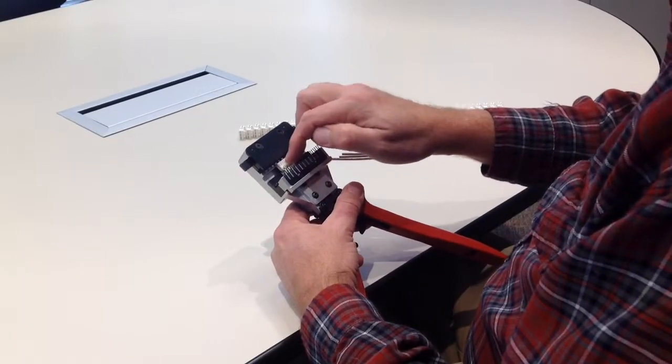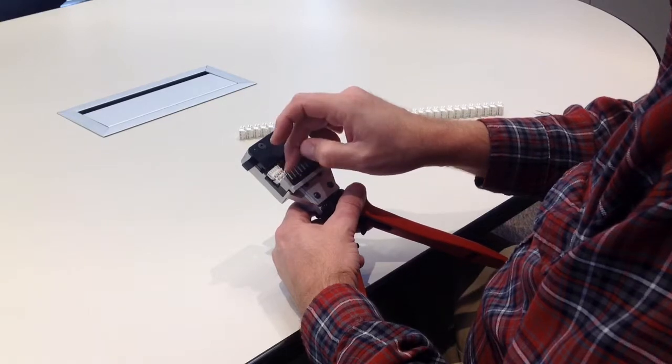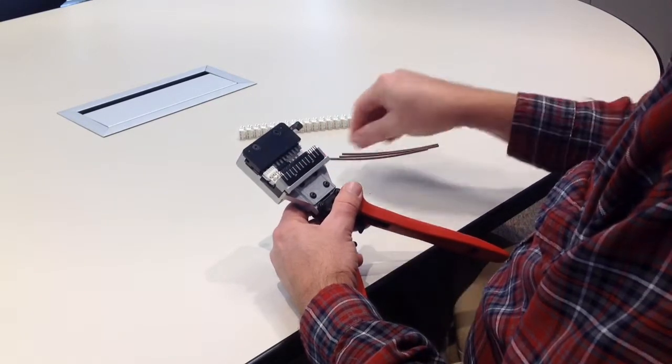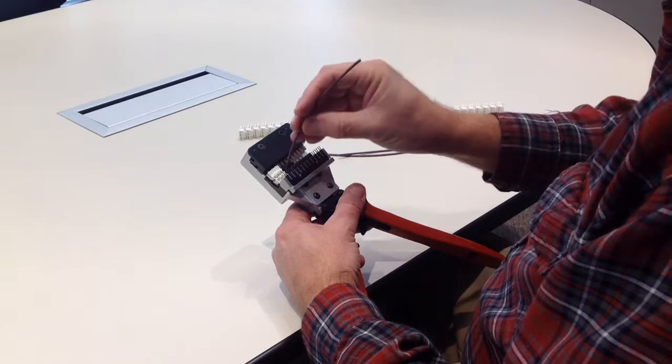So you'll end up with a single connector like this, and it's loaded in the tool from the side. Once you have it loaded in, you push a lever on the tool to hold the connector in place.